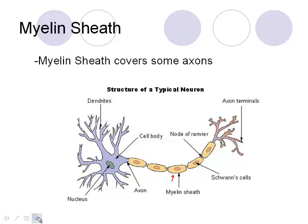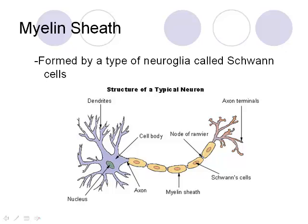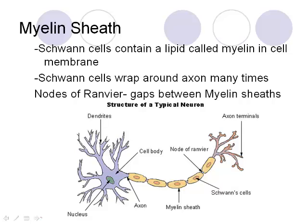The myelin sheath covers the axons. It's made of neuroglia — accessory nervous tissue — specifically called Schwann cells, which are continually wrapped around the axon. The Schwann cells are lipid-based, and they wrap around the axon to insulate it, preventing anything from entering or exiting.